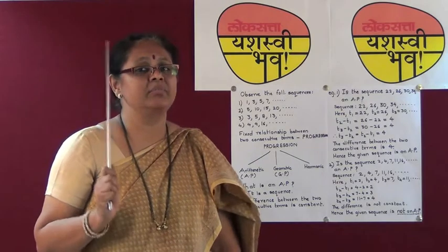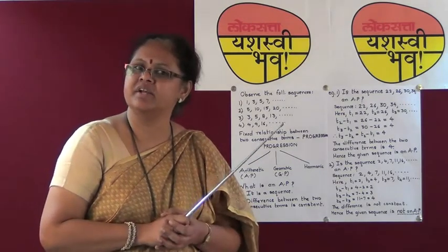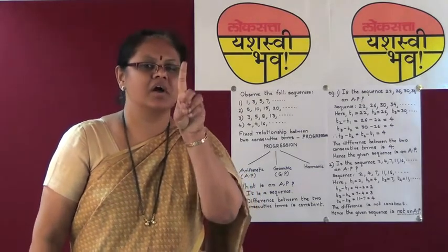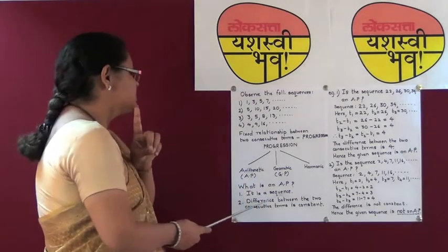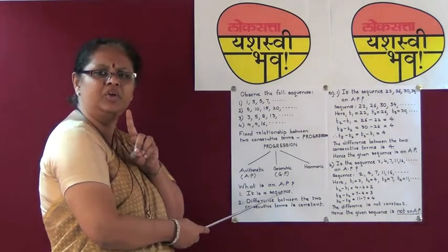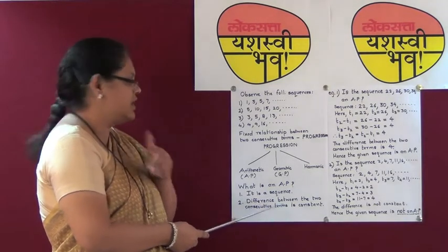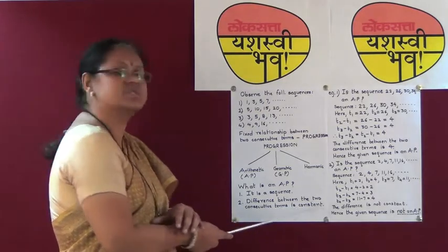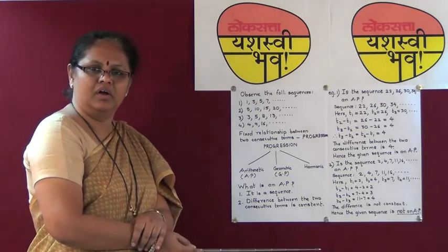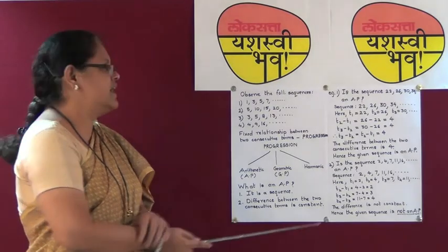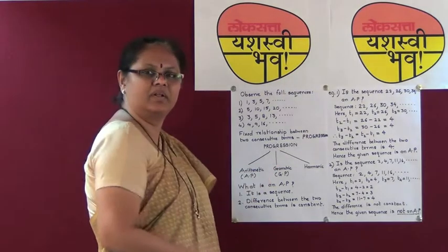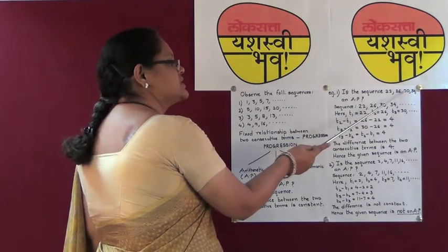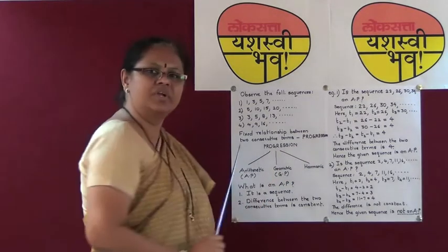Students, when you revise arithmetic progression, learn two things. First, arithmetic progression is a sequence. Second, the difference between two consecutive terms is constant. Let us understand this by taking one example: is the sequence 22, 26, 30, 34 an arithmetic progression?